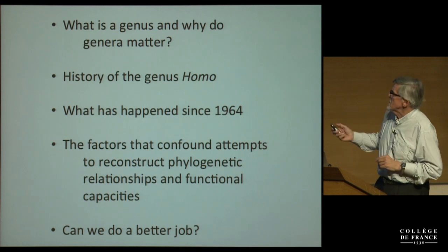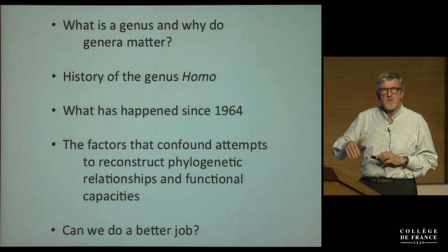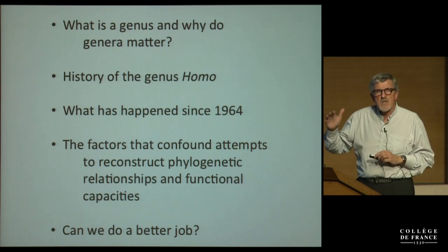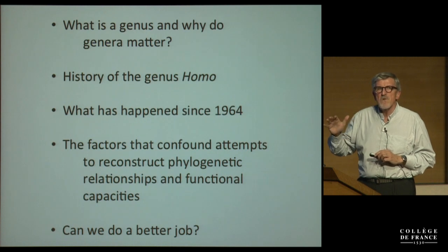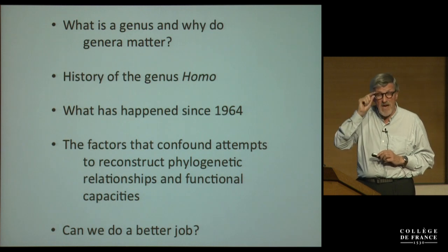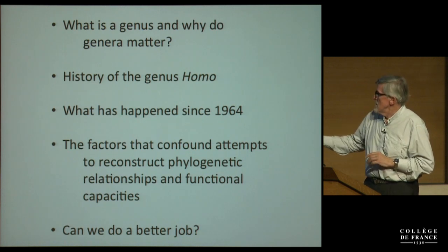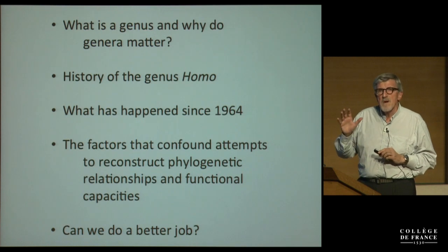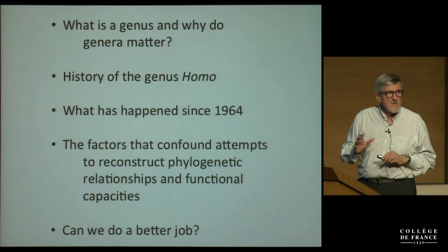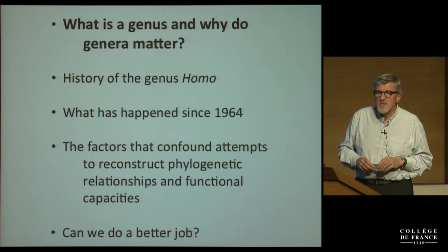So what I want to do is talk about these things: what is a genus and why do genera matter? Something about the history of the genus Homo, which will overlap with what Jean-Jacques has spoken about. He mentioned the date 1964 as the date of the publication which established the taxon called Homo habilis. I want to talk about what's happened since 1964, then the factors that make it really difficult for us to address this problem, and then ask whether we can do a better job.